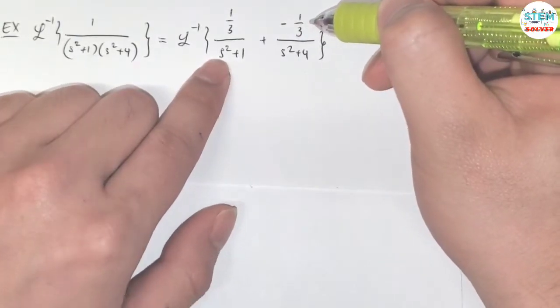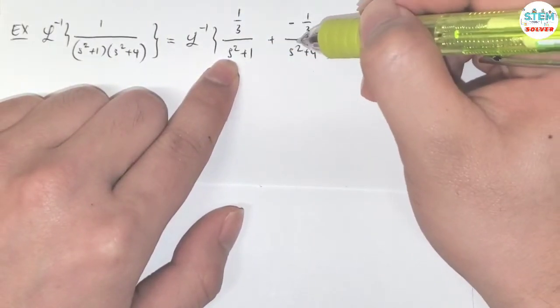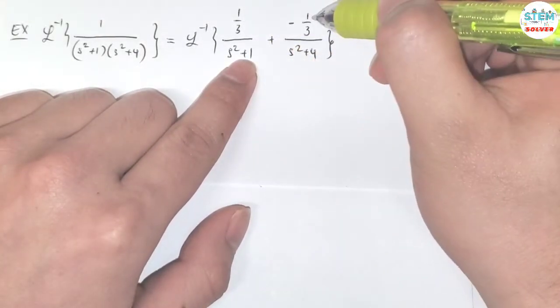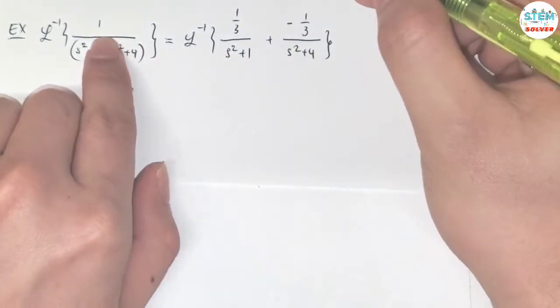Then you check it, so you have negative 1 third x squared plus 1 third x squared equals 0, negative 1 third times 1 plus 4 over 3, which is 3 over 3, which is 1. Okay, so we did it.